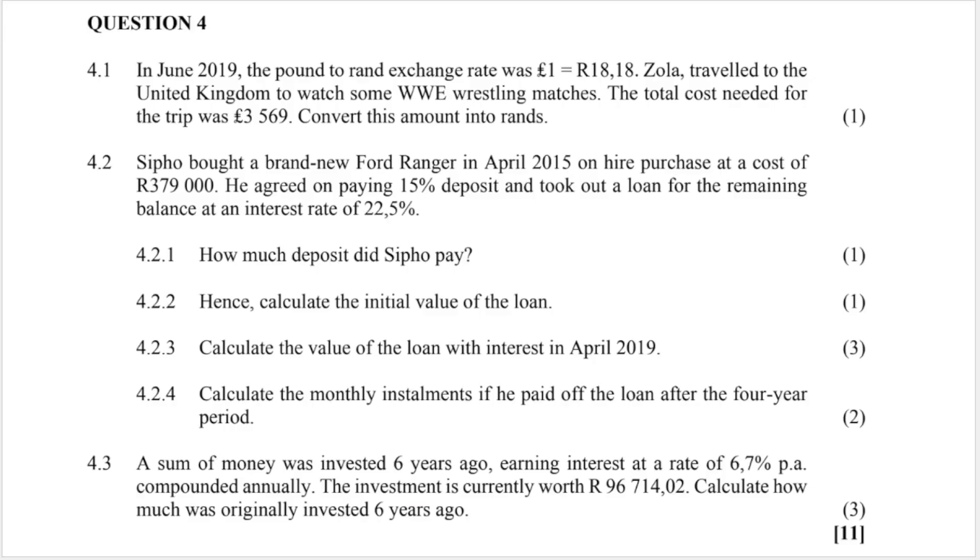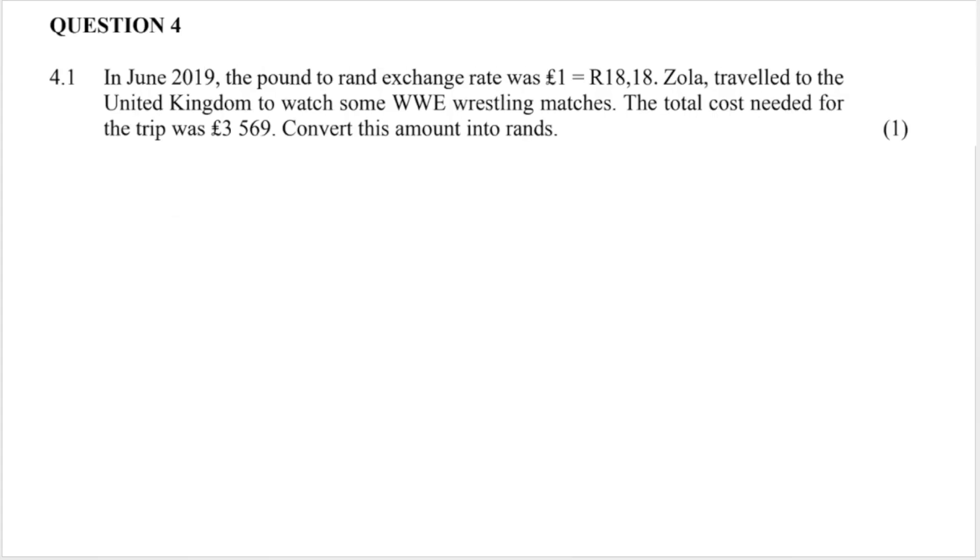Remember to hit the subscribe button if you're not an official part of my Miss Martens classroom yet. Let's jump right into these questions. My first question is an exchange rate question. You can always expect an exchange rate question. In this question they are giving me the pound to rand exchange rate. That's the exchange rate as given and they say that Zola traveled to the United Kingdom to watch some WWE wrestling matches and the total cost needed for the trip was £3,569. We need that amount in rands. We know that one pound is 18.18 rand. That means that this many pounds to get it to rands I'll need to multiply by 18.18.